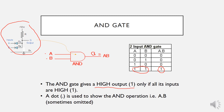Besides the case where both inputs are high, all other input combinations give a zero output. Normally for the AND gate we use a dot to show the AND operation, written as A·B. Some books omit this dot and simply write AB without the dot in between.